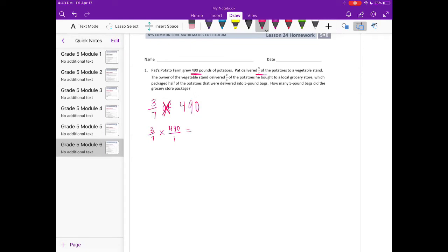Let's start by doing 490 times 3, and we would get 1,470. Then if we multiply the denominator, 7 times 1 is 7.